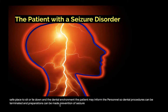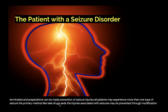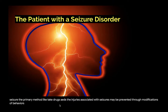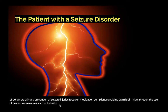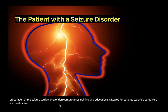All patients may experience more than one type of seizure. The primary method to control and prevent seizures is through anti-epileptic drugs (AEDs). Primary prevention of seizure injuries focuses on medication compliance and avoiding brain injury through protective measures such as helmets and mouth guards. Secondary prevention includes early detection, recognition, and preparation for the seizure. Tertiary prevention comprises training and education strategies for patients, teachers, caregivers, and healthcare practitioners.